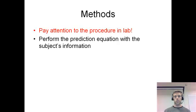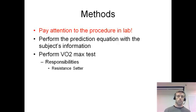The first thing you have to do is perform the prediction equation with the subject's information. Then we have to perform the VO2 max test. There's certain responsibilities that are going to have to occur during the test. One would be the resistance setter. All you have to do is turn the knob on the bike. It's going to be the same setup that we did last week. We're going to have someone pedal against certain resistance, and we're just going to increase the resistance every few minutes according to the protocol.